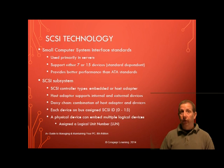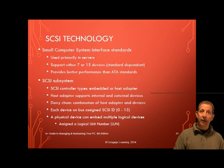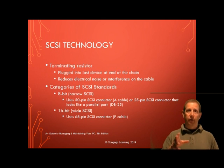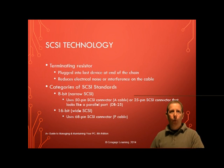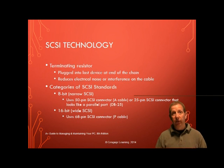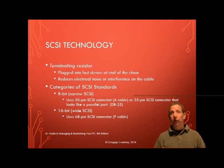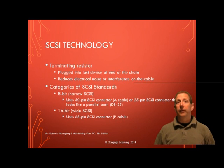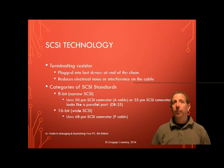Each logical device is assigned a logical unit number, or LUN, to identify it — such as 1 through 7 or 0 through 6. The SCSI ID and LUN are written as two numbers separated by a colon; for instance, if the SCSI ID is 5, the fourth tray in the jukebox is device 5:4. To reduce electrical noise or interference on a SCSI cable, each end of the SCSI chain must have a terminating resistor. The two general categories of SCSI standards have to do with the width of the SCSI data bus: either 8 bits for narrow or 16 bits for wide.